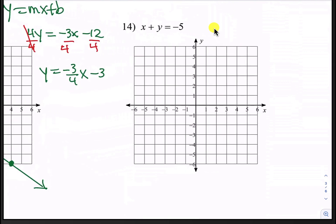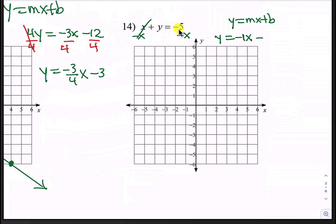All right, here's number 14. Again we want to make it into the form y equals mx plus b. We'll need to subtract x from both sides. That leaves us with y equals negative x minus 5, or negative 1x minus 5. Our slope is negative 1 over 1 and our y-intercept is negative 5. Starting at negative 5 on the y-axis, go down 1 and to the right 1. You can continue doing that again — down 1 and to the right 1 for an additional point — and we can connect.